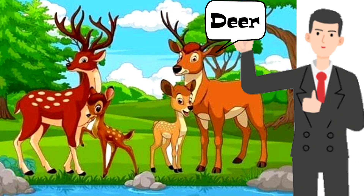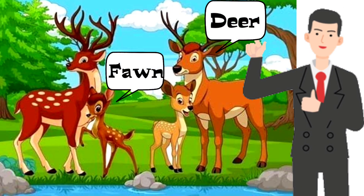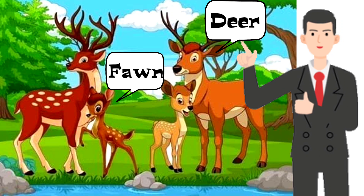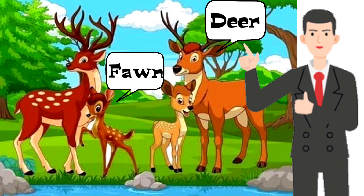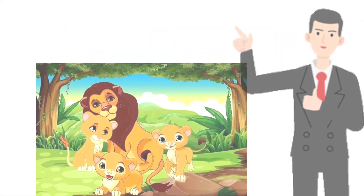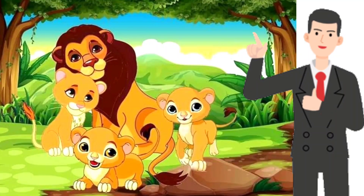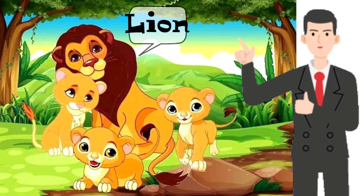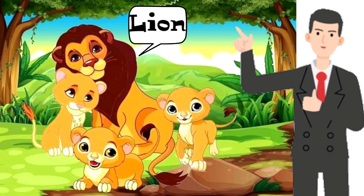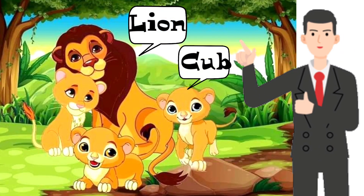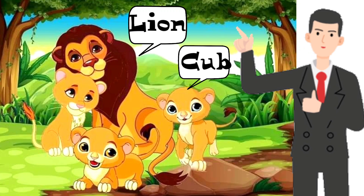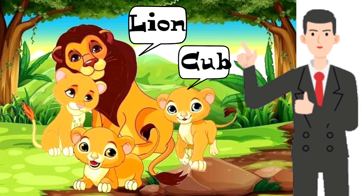Deer, Fawn. Young one of deer is called Fawn. This is Lion and this is Cub. Young one of lion is called Cub.